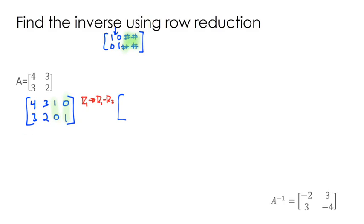So if I do that, 4 minus 3 is 1, 3 minus 2 is 1, and then 1 minus 0 is 1, and then 0 minus 1 is negative 1. I'm not going to do anything to the second row yet, so it stays 3, 2, 0, 1.